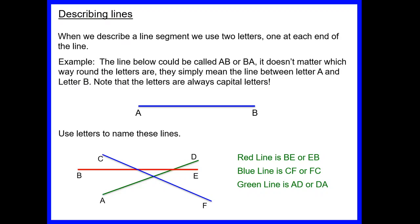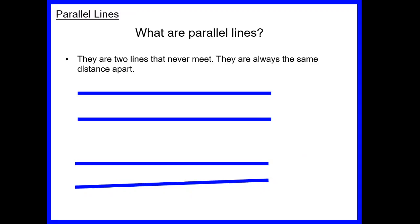There are different types of lines we need to identify. Parallel lines are two lines that never meet — always the same distance apart, like train tracks. No matter how long we extend them, they'll never cross. The top example is parallel; the bottom one is not, because if we extend those lines they will eventually cross over.